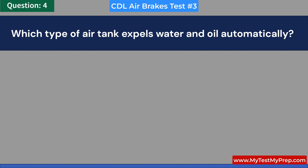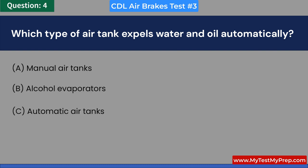Which type of air tank expels water and oil automatically? A. Manual air tanks. B. Alcohol evaporators. C. Automatic air tanks. D. All of the above. Answer: C. Automatic air tanks.